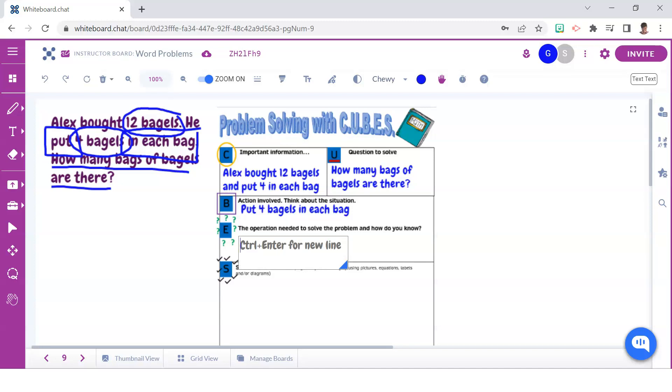E is where students need to take time to reflect on what has taken place in the word problem. And since the twelve bagels were separated, being that they were put four into each bag, we can reason that division will be needed to solve this word problem because we're given the total and we were also given the number in each group. We just need to find out how many groups are there, or in other words, how many bags are there.